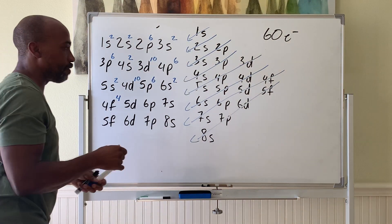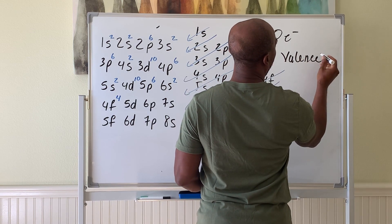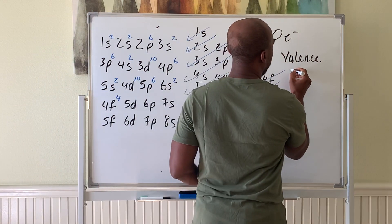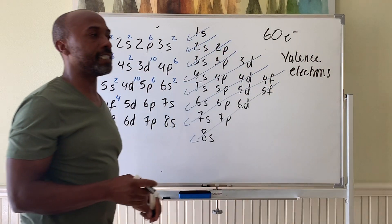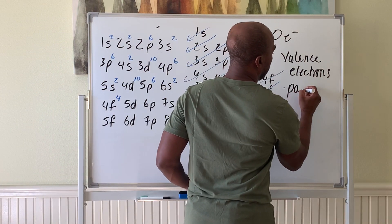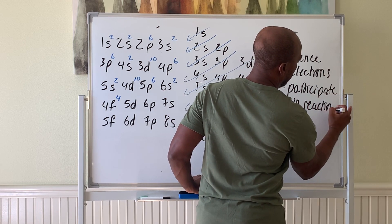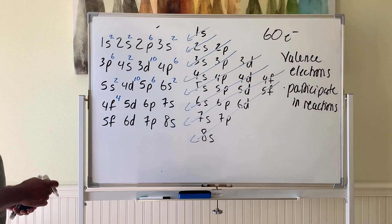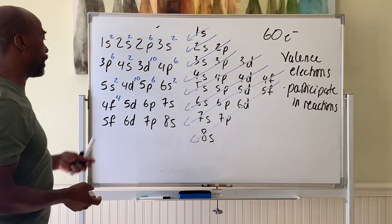There's something called the valence shell. The valence shell refers to the outermost shell, and the valence electrons are all of the electrons in that valence shell. These are the ones that will participate in chemical reactions, so you want to know how many electrons an element has available to get involved in a reaction.